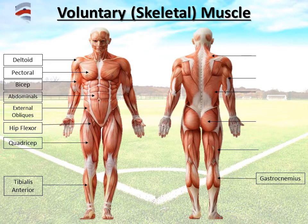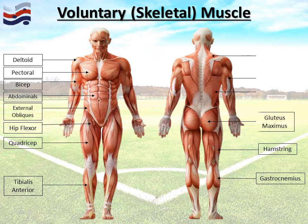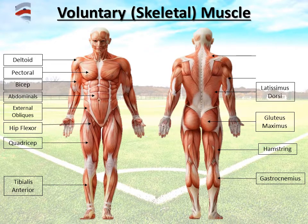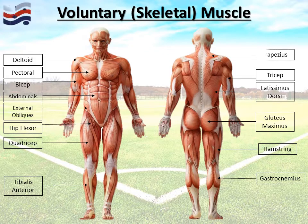Back of the lower leg, we have the gastrocnemius. Back of the upper leg, we have the hamstring. Located in the bum area, we have the gluteus maximus. On either side of the back, we have the latissimus dorsi. Back of the upper arm, we have the tricep. And lastly, starting at the neck and going down towards the vertebral column, we have the trapezius.